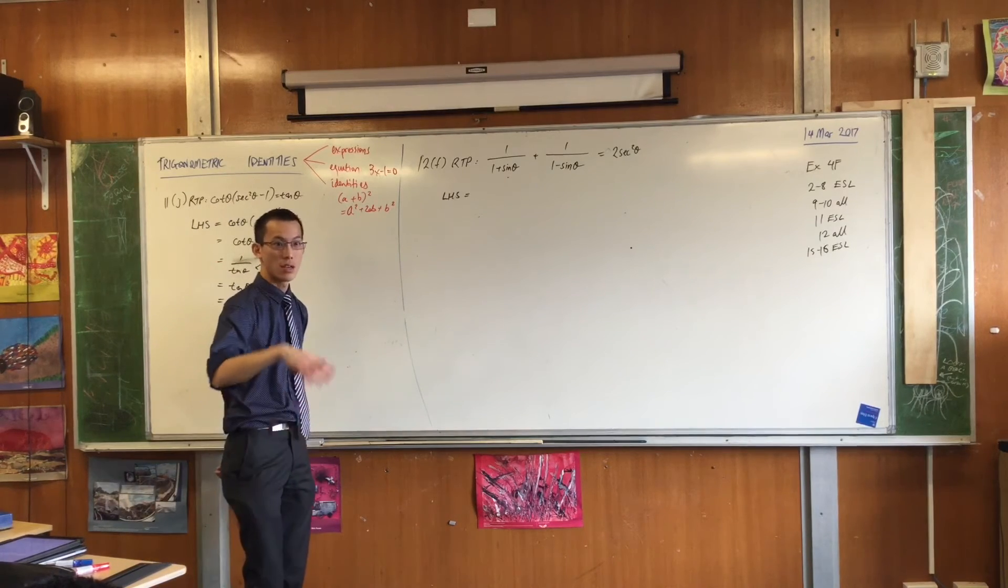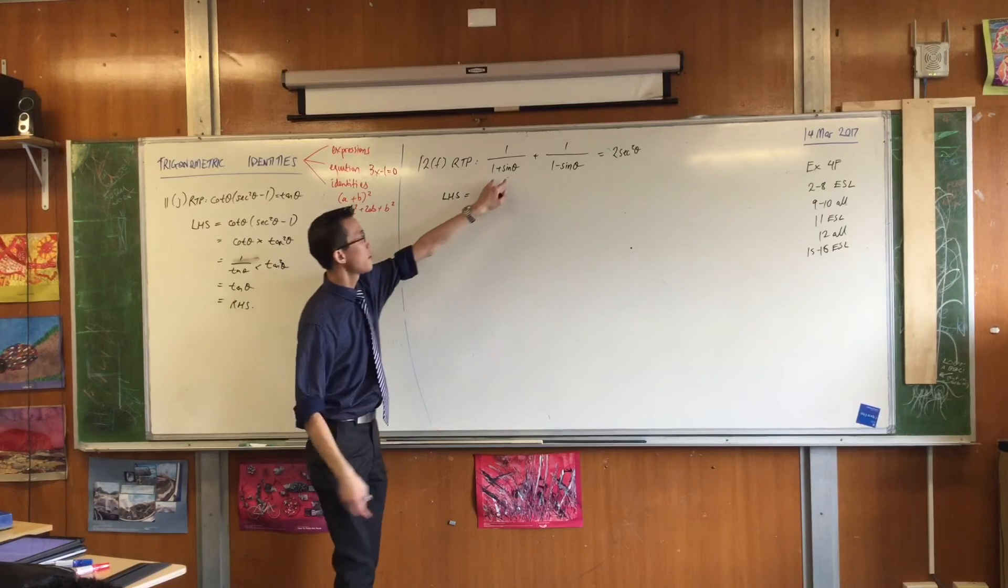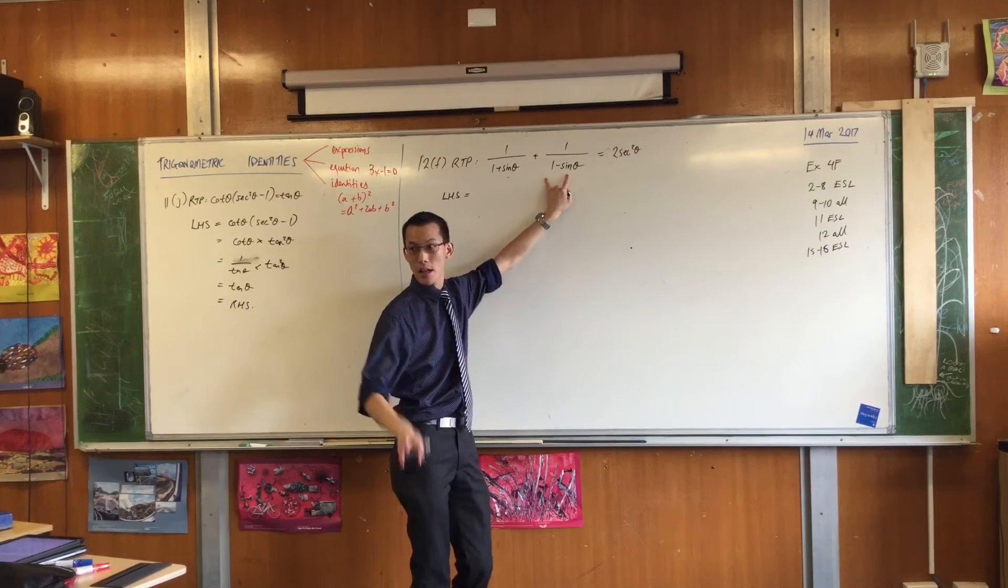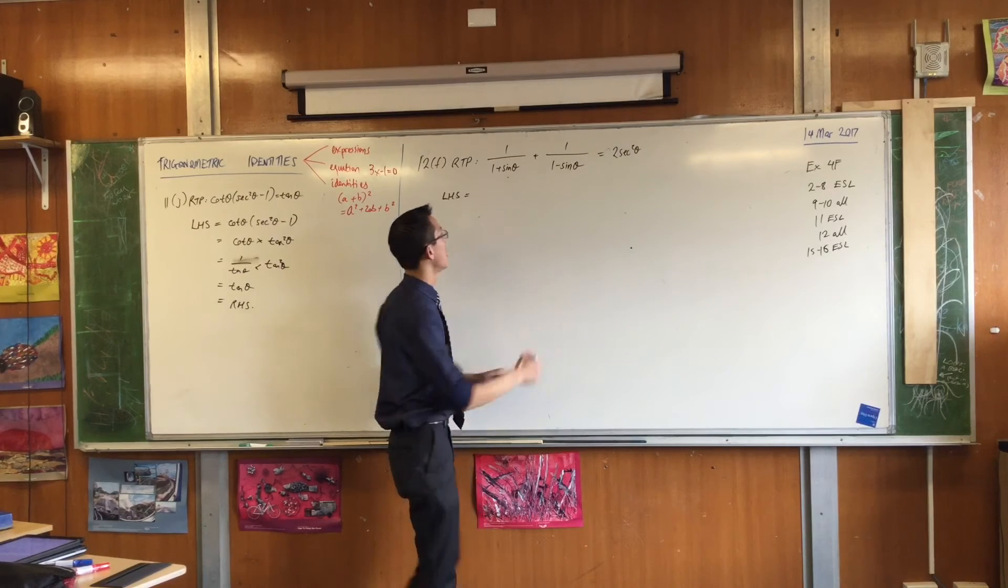One minus sine squared theta. Do you notice that? Because look, if I multiply this by one minus sine theta, multiply this by one plus sine theta, you've got difference of squares, yes? So I'm just going to do that now. I've got one minus sine theta.